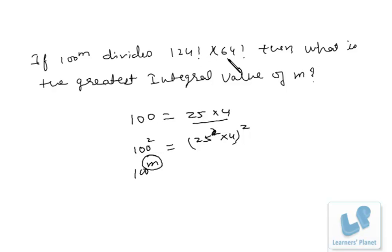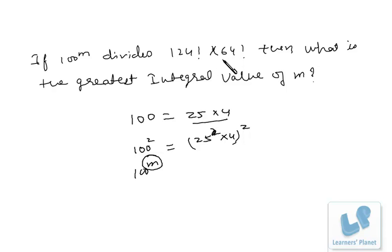To make it simpler, instead of finding out 25s directly, we should find out the number of 5s in these two factorials, because two 5s make 25. So if we get an odd number of 5s, from the extra 5 we will get one more 25. So do not divide directly by 25 — instead divide by 5.